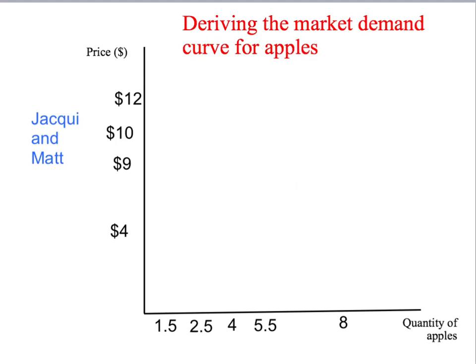So let's start deriving our market demand curve. Our market is going to be very simple — it's going to have two people in it: Jackie, who we've already met, and Matt. We know what Jackie's demand curve looks like. If the price of apples is $12 or more, she doesn't want to buy any apples. If the price of apples is $9 per kilo, Jackie would like to buy four kilograms. And if the price is $4 per kilogram, Jackie would like to buy five and a half kilograms of apples. Joining up all of these points, we get Jackie's demand curve for apples.